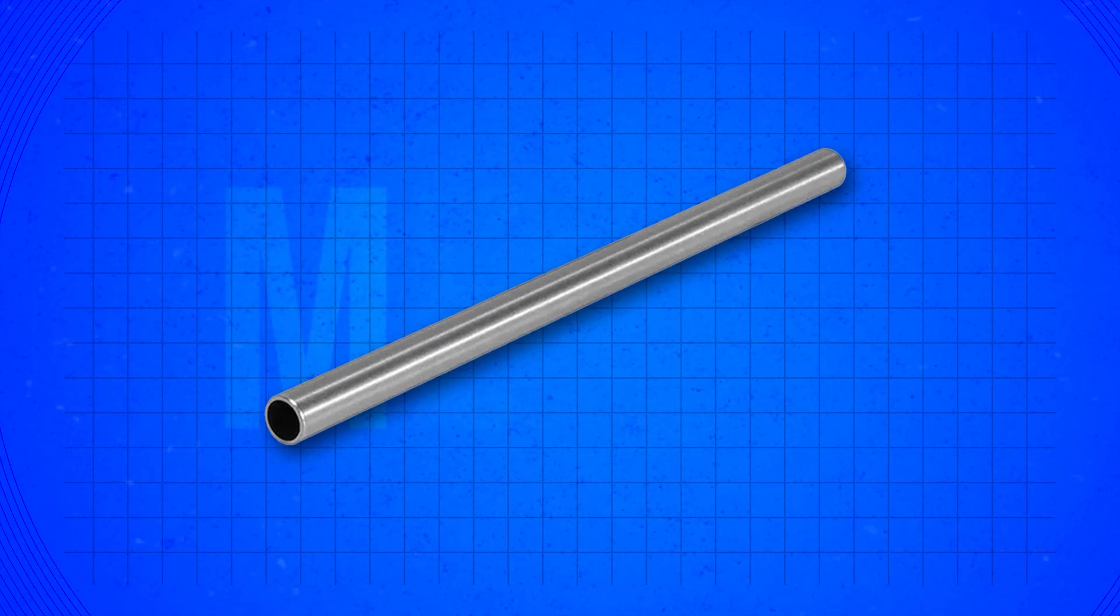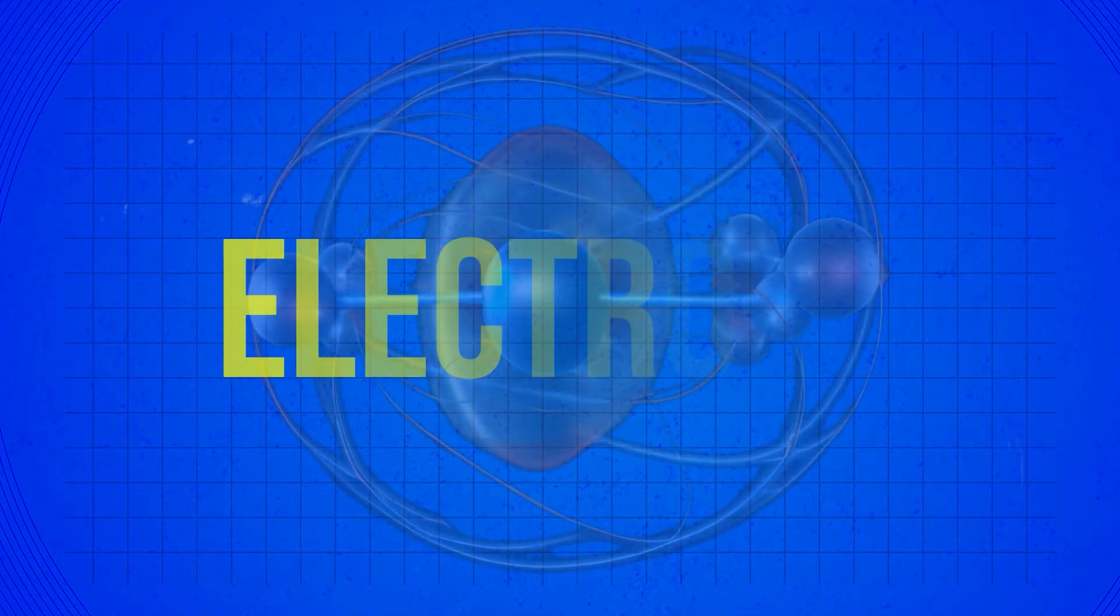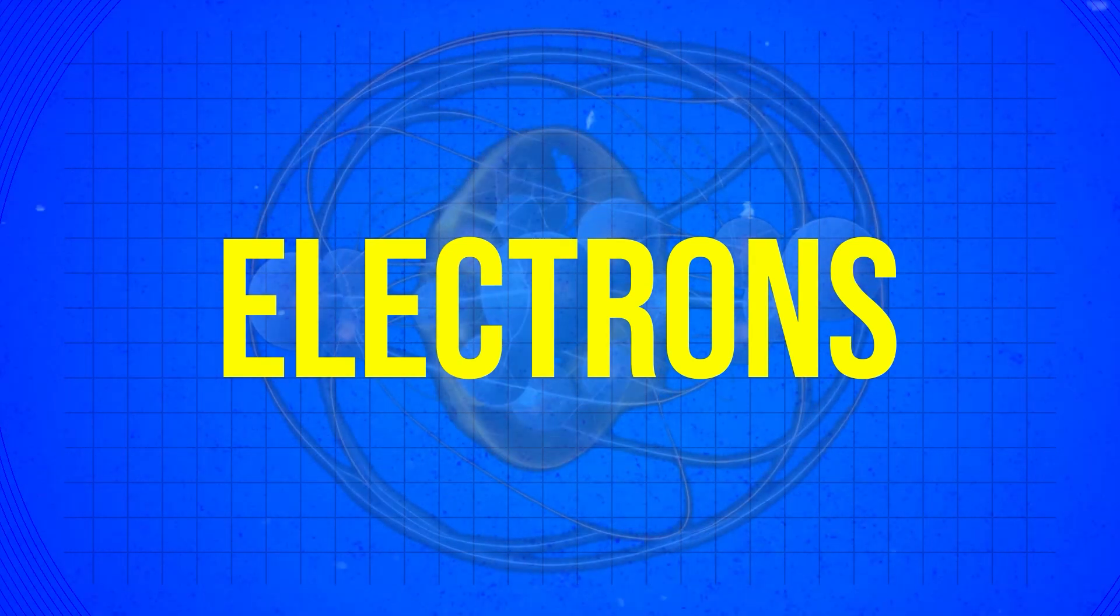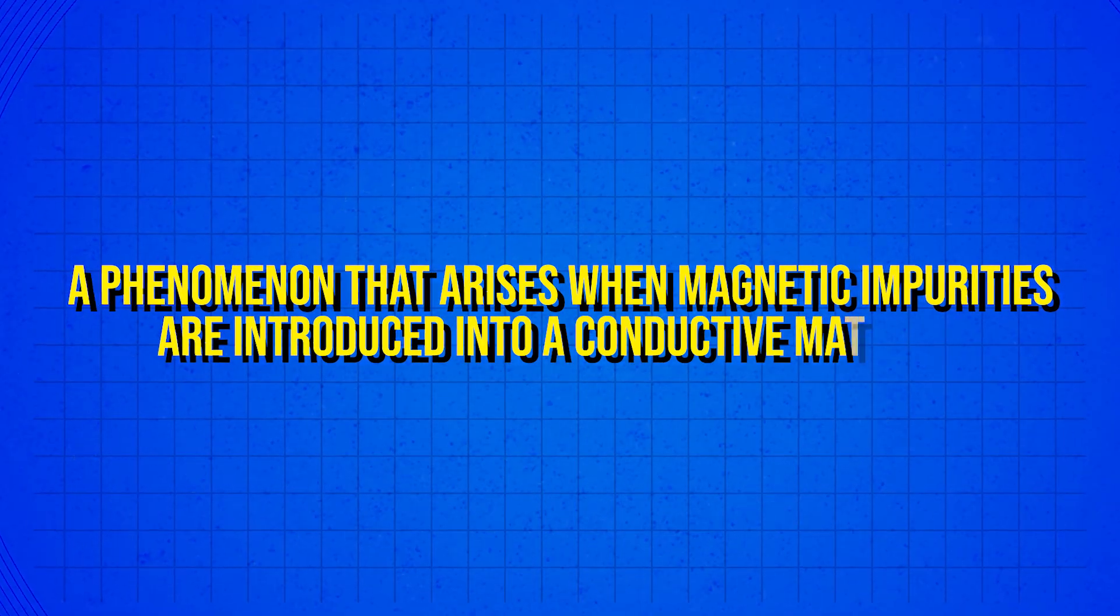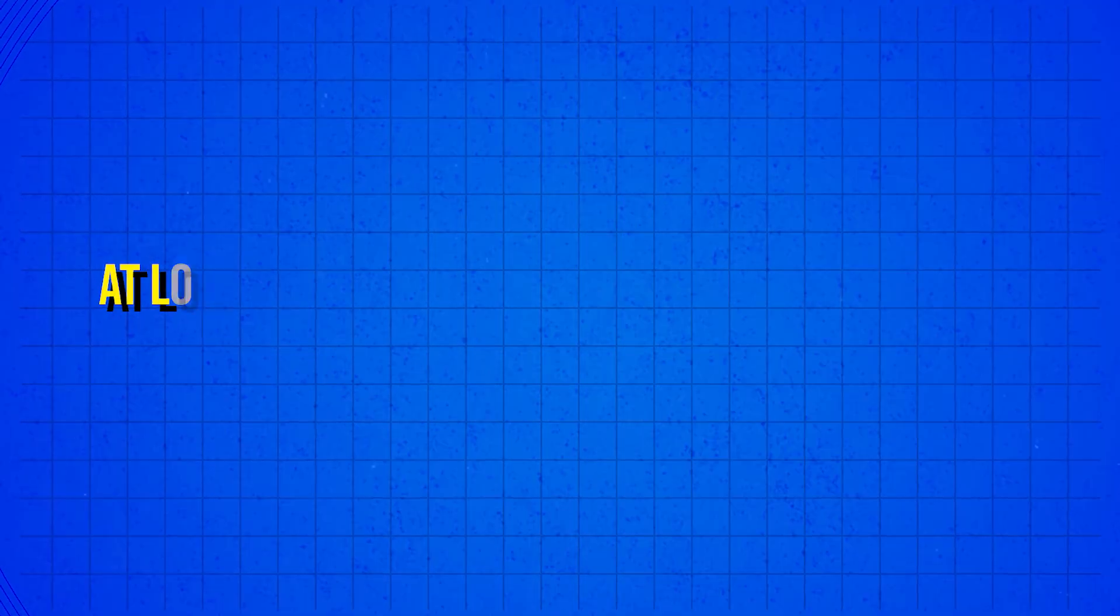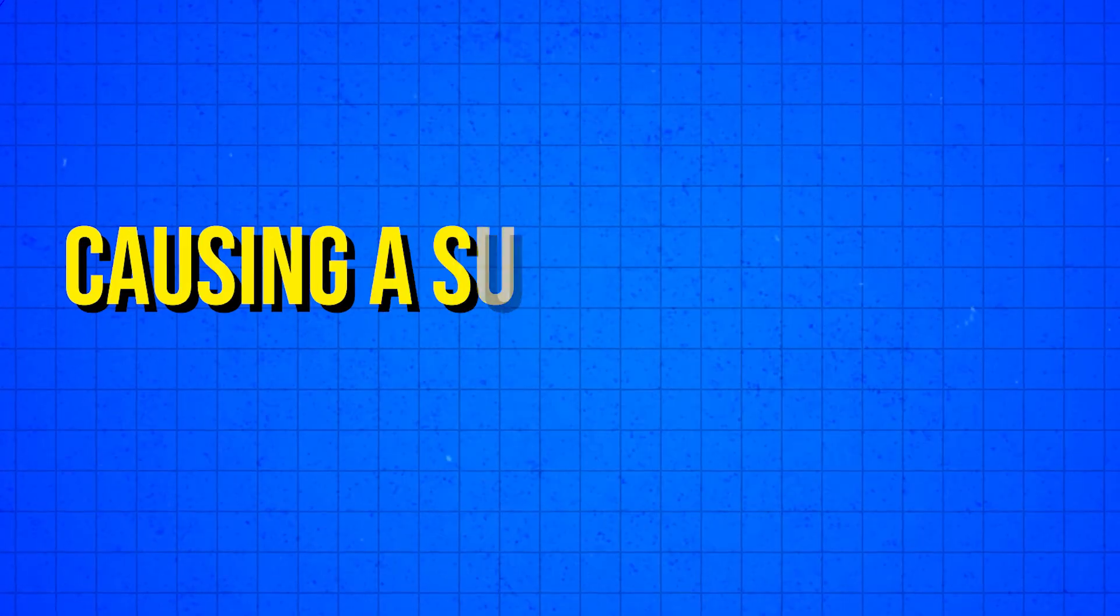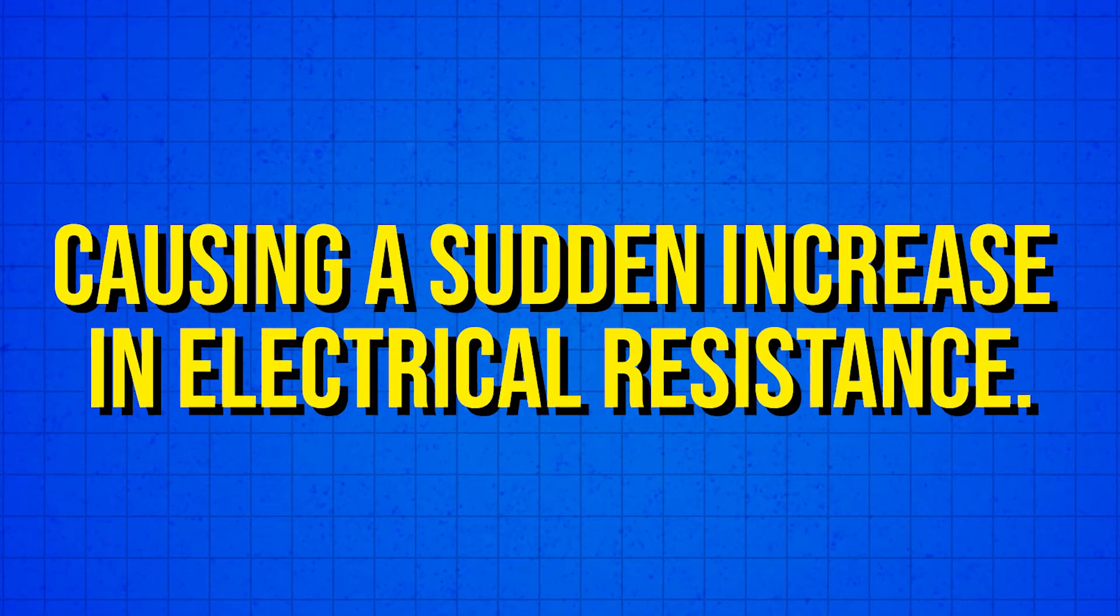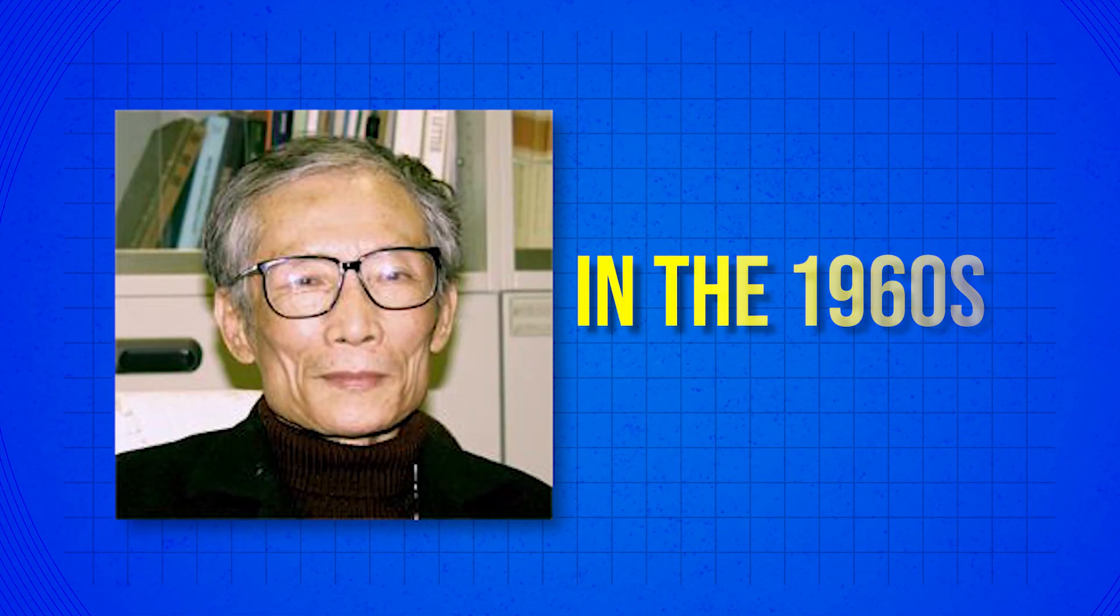Imagine a metal, a seemingly ordinary material, where the behavior of its electrons takes an unexpected turn. This is the Kondo effect, a phenomenon that arises when magnetic impurities are introduced into a conductive material. At low temperatures, these impurities interact with the electrons in a remarkable way, causing a sudden increase in electrical resistance. This effect, first discovered by Jun Kondo in the 1960s, puzzled scientists for decades.